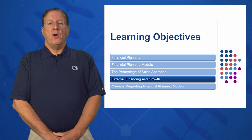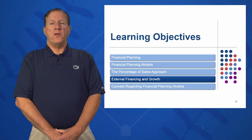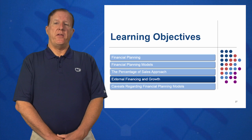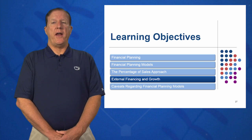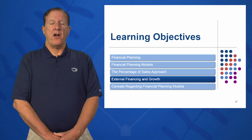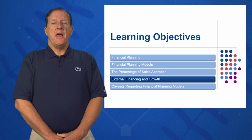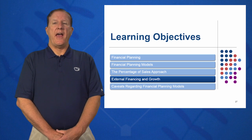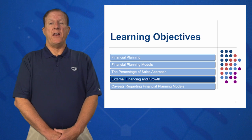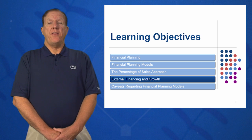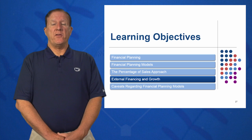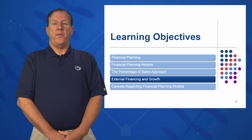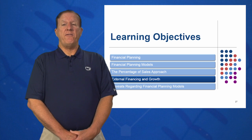In learning objective four, we're going to look at external financing and growth — specifically the internal growth rate and the sustainable growth rate, how to calculate them, and what they mean. The internal growth rate looks at how fast we can grow with no external financing, and the sustainable growth rate looks at how fast we can grow our company's sales with just debt financing.